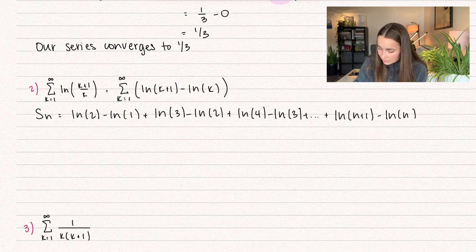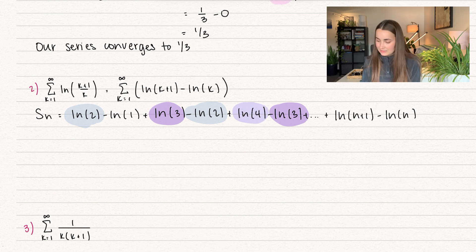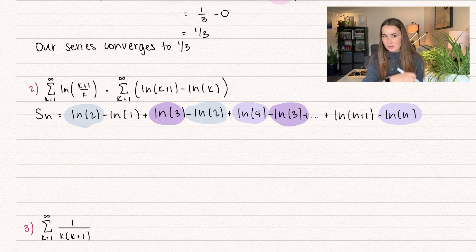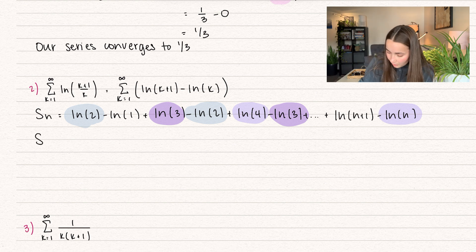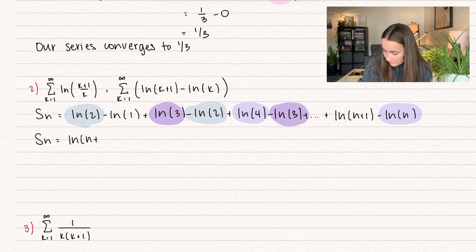Let's go ahead and see which terms cancel out. Natural log of 2 minus natural log of 2 cancels out, natural log of 3 minus natural log of 3 cancels. So all of these terms in the middle are going to cancel out until we get to that minus natural log of n, because natural log of n plus 1 would come later down the line. Our partial sum is equal to negative natural log of 1, but natural log of 1 is just 0, so we get natural log of n plus 1.